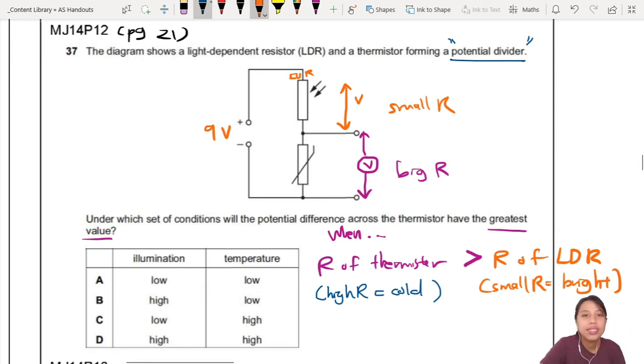So based on these ideas. Now you go and see. Thermistor have to be cold. So temperature have to be low. So these two are already. Yes. This one wrong.